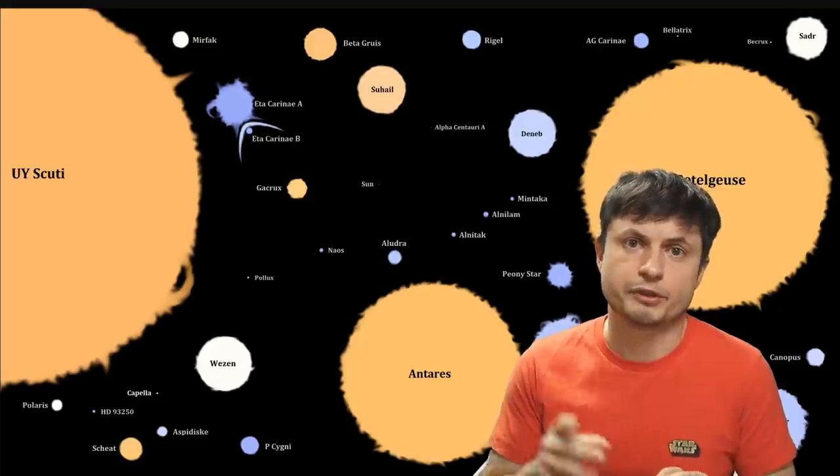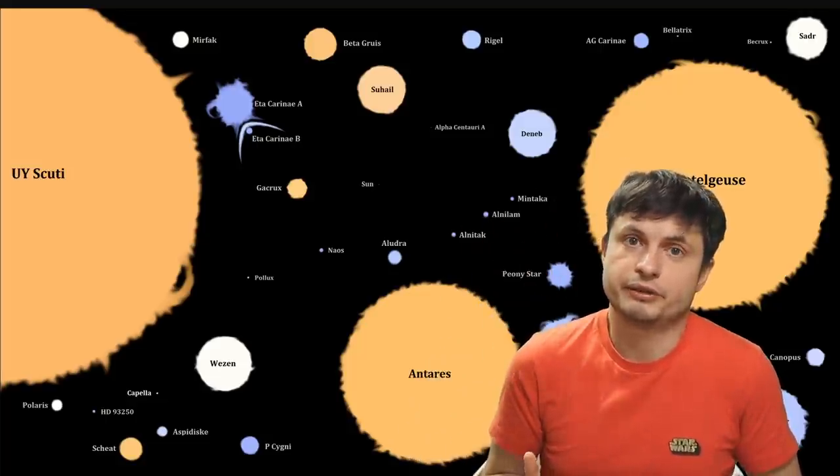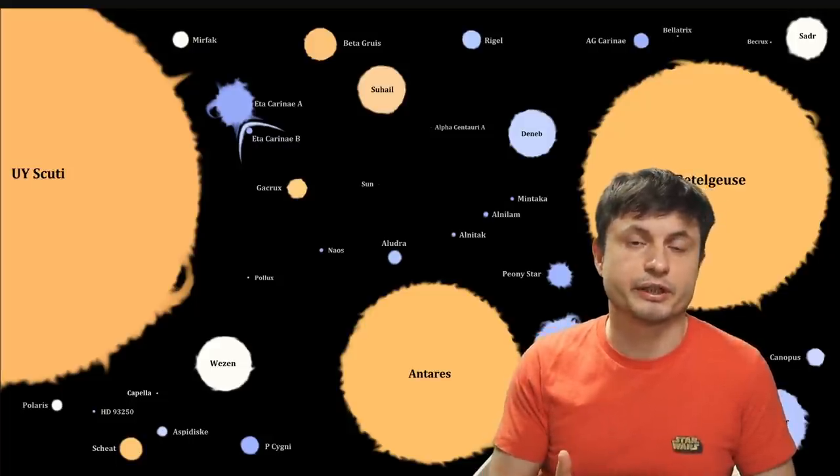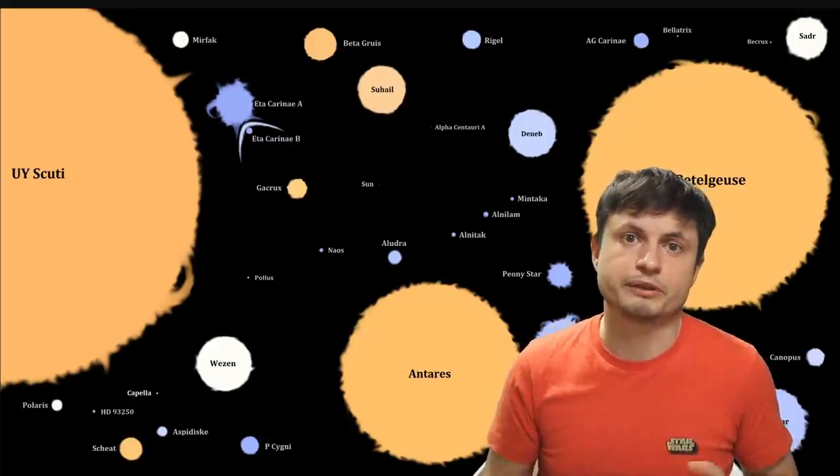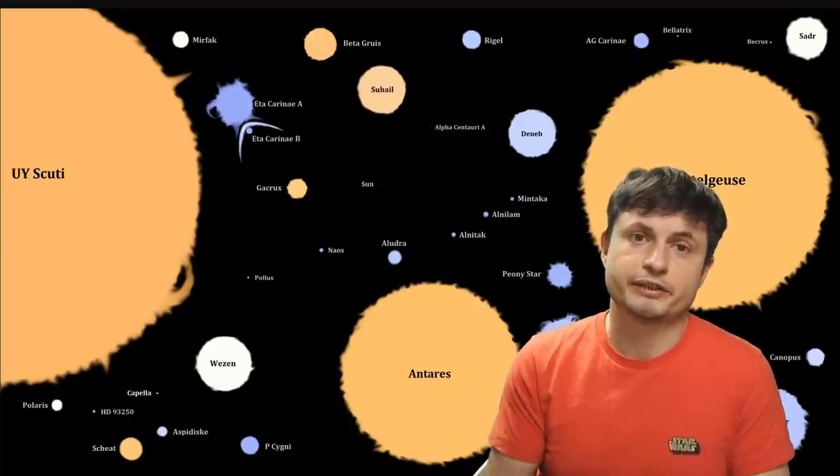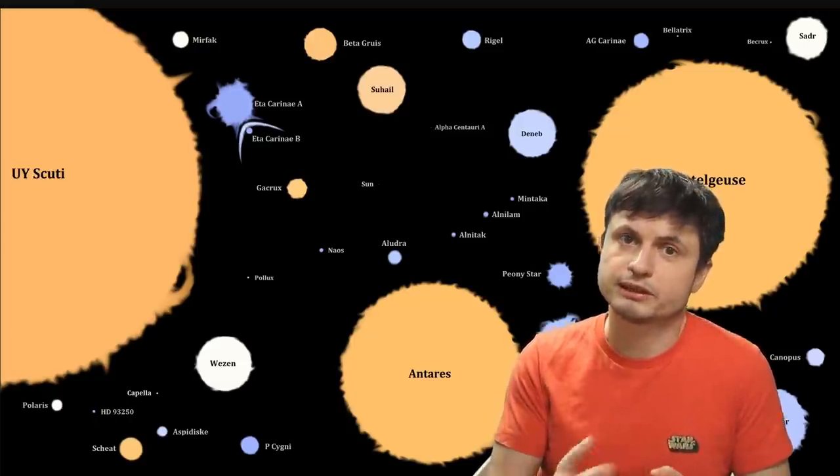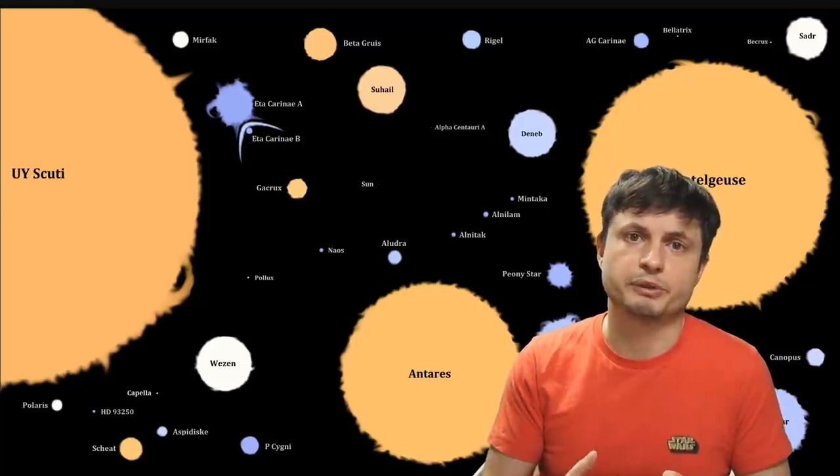And although until recently U.Y. Scooty was thought to be the biggest star we've found so far, as you might have learned from one of the previous videos somewhere right there, it turns out that we were kind of wrong about the size. The new record holder is another star and you can kind of learn more about this in that video. But these red giant stars are pretty common and by the way our sun is also going to become relatively large in the next 5 to 6 billion years from now.